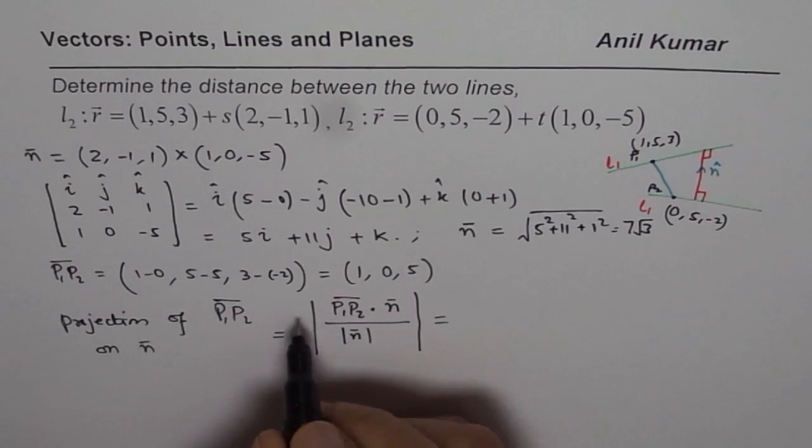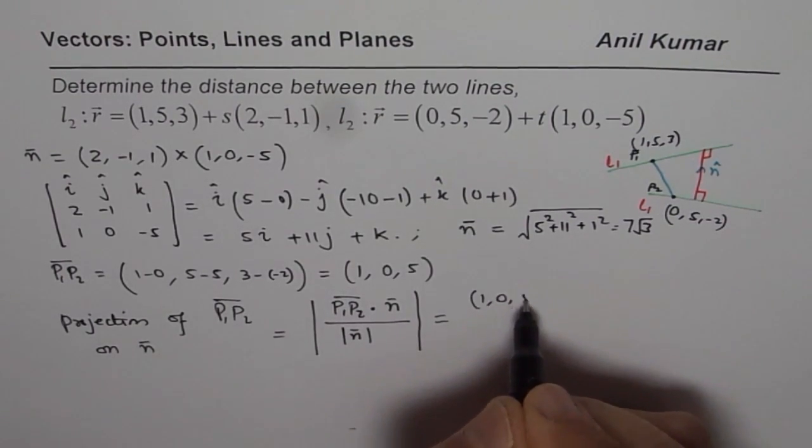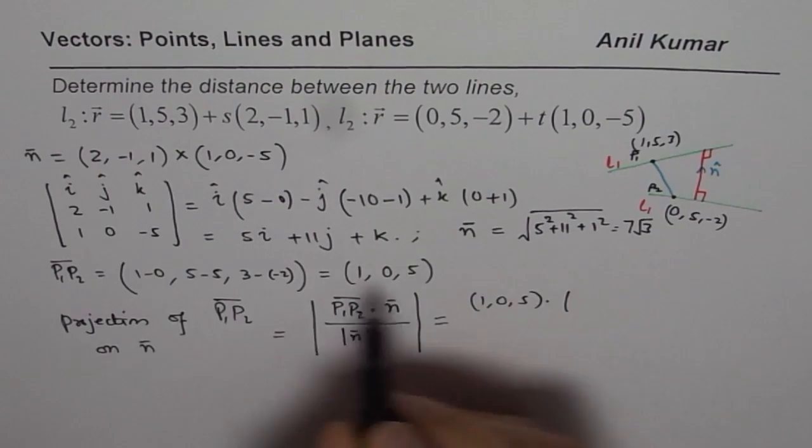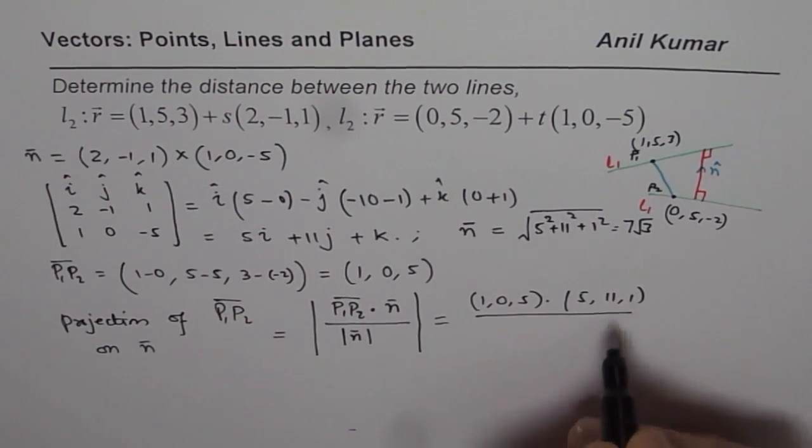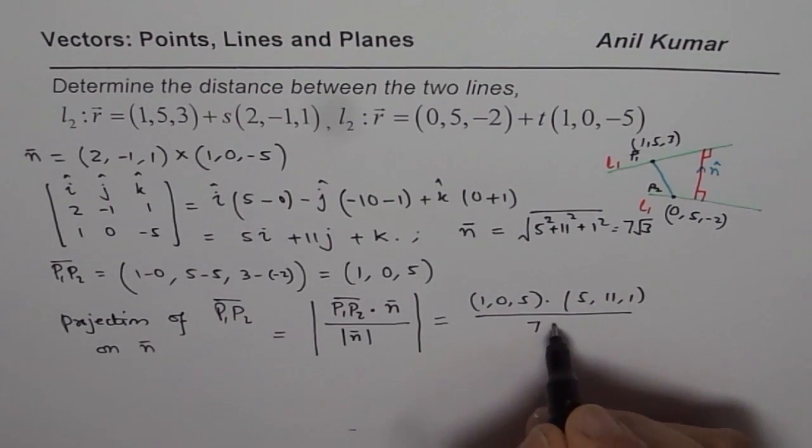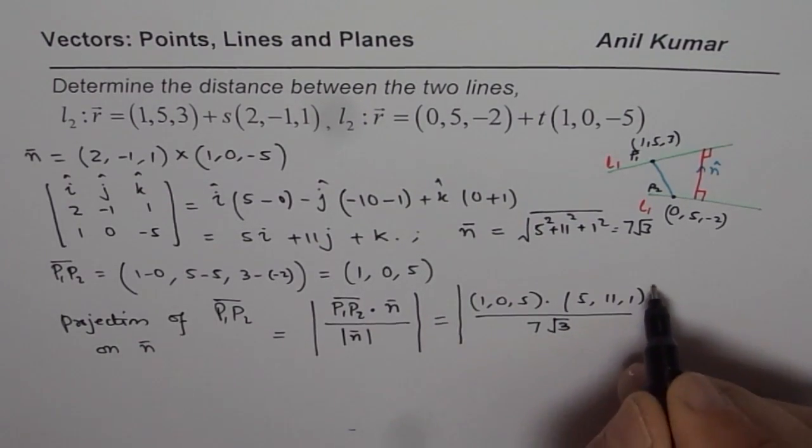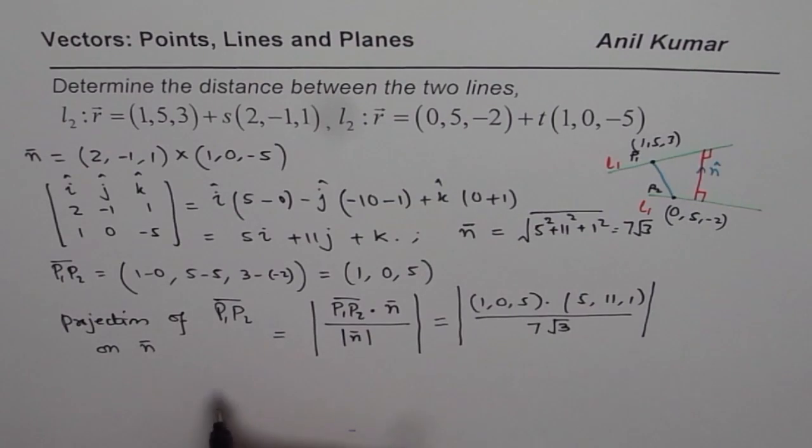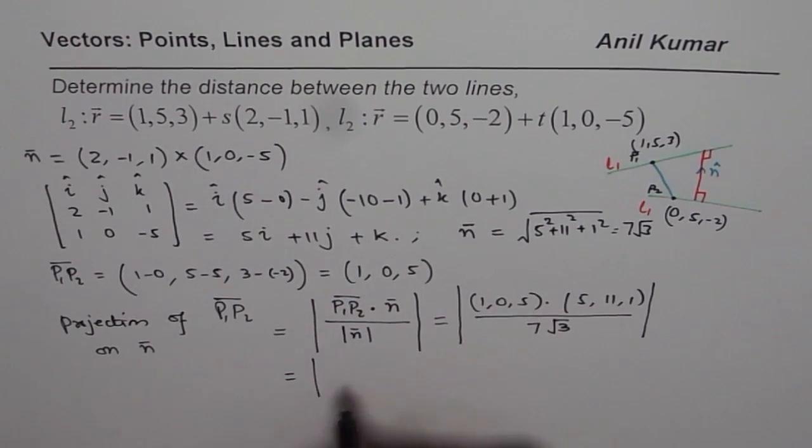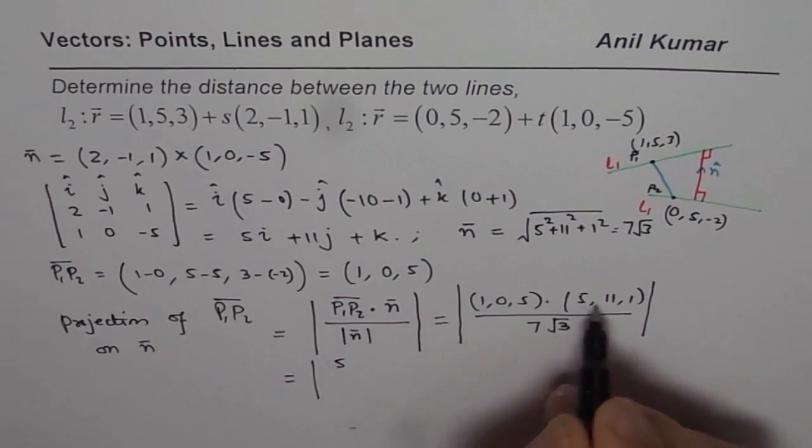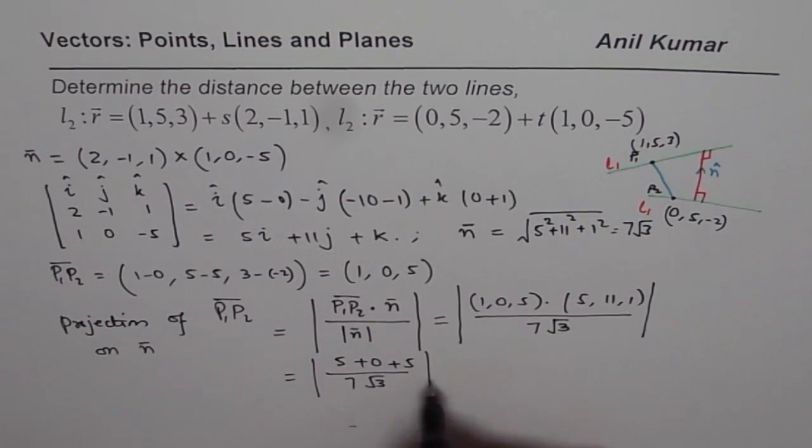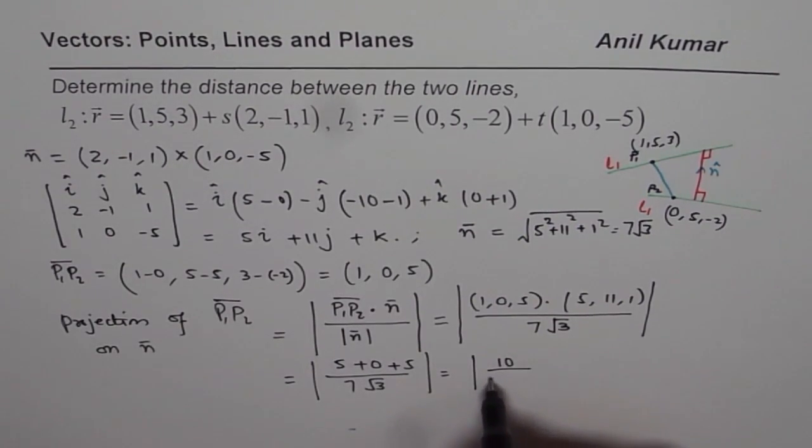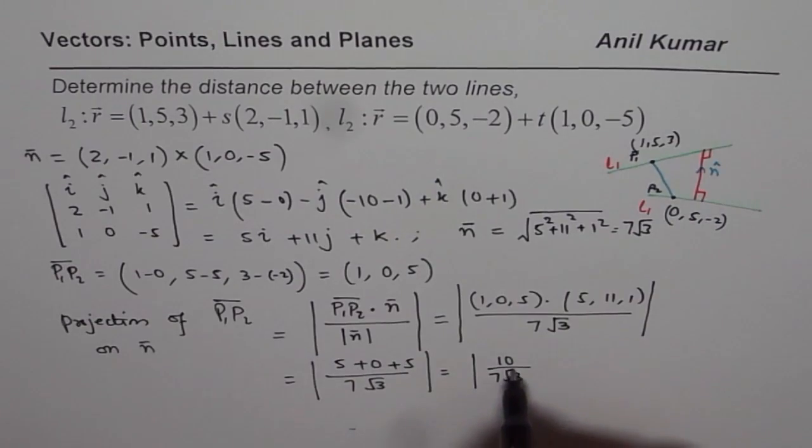Let us find the dot product. So, P₁P₂ is (1, 0, 5) dot product n is (5, 11, 1) divided by magnitude, which is 7√3. We have to take absolute values of this. 1 times 5 is 5, 0 times 11 is 0, 5 times 1 is 5, divided by 7√3. That is, absolute value of 10 over 7√3.